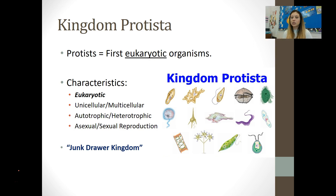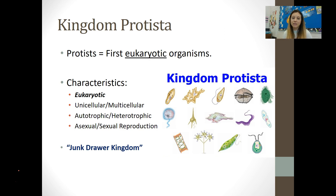The very first eukaryotic organisms to appear are what we refer to today as protists. Right now, protists belong to their own kingdom — kingdom Protista — but there's controversy about whether this should be its own separate kingdom or whether we should split them into animals, plants, and fungi. We call this the junk drawer kingdom because there's a little bit of everything here, just like that junk drawer at home where stuff doesn't really fit anywhere else. The only defining characteristic they all have in common is that they are eukaryotic.